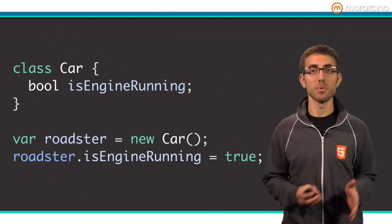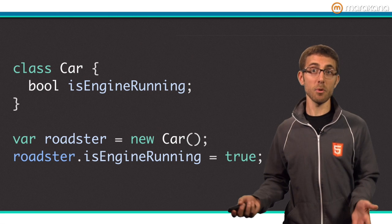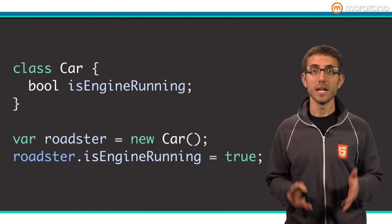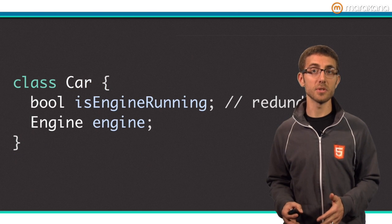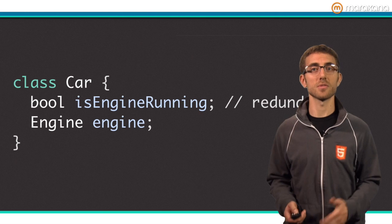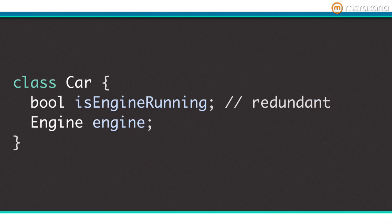Dart wants to make it easy for you to evolve your API and help you start simple and grow over time. A simple way to start is to just use fields. Here's an example. Let's imagine that over time the class evolves to include a field for the engine. We can determine if the engine is running by asking the new engine field. This makes the isEngineRunning field redundant. However, if we remove isEngineRunning, we break existing users of the code. We want to change the implementation of the class without breaking backwards compatibility. This is exactly why getters and setters were introduced.